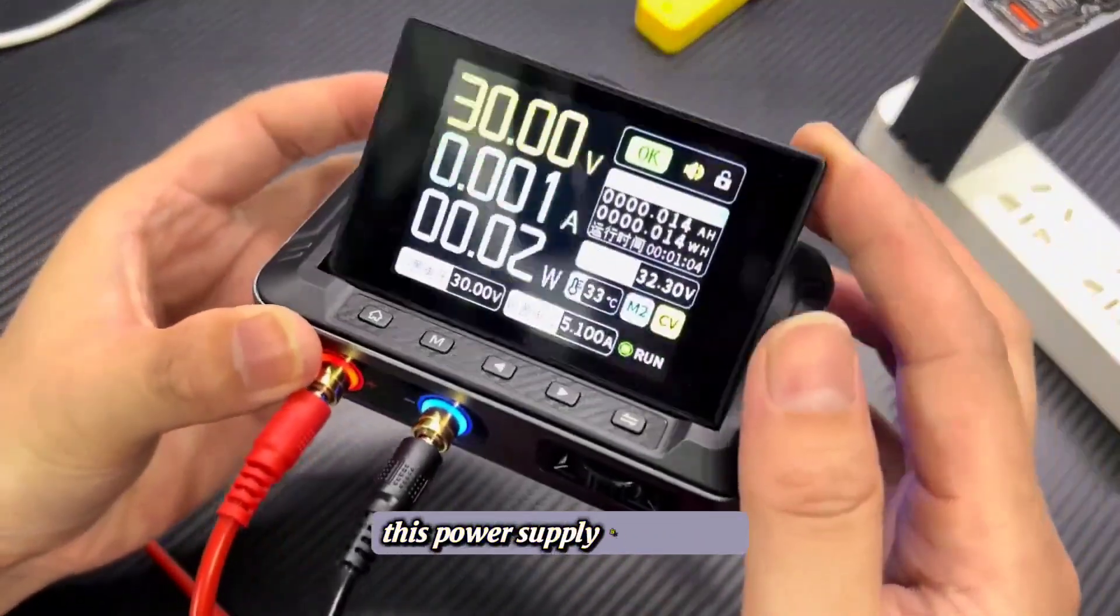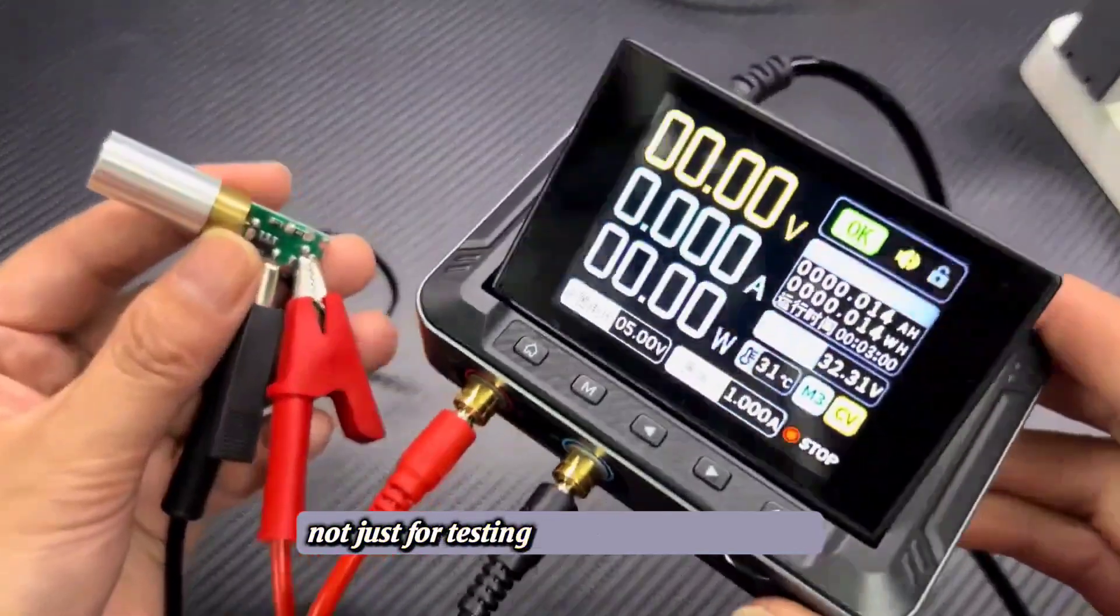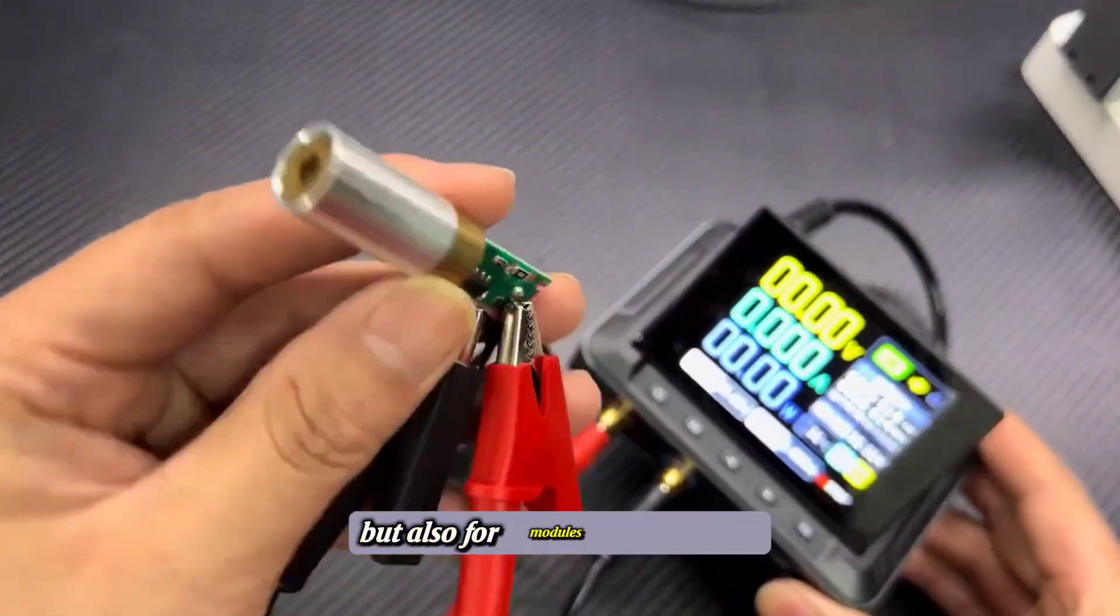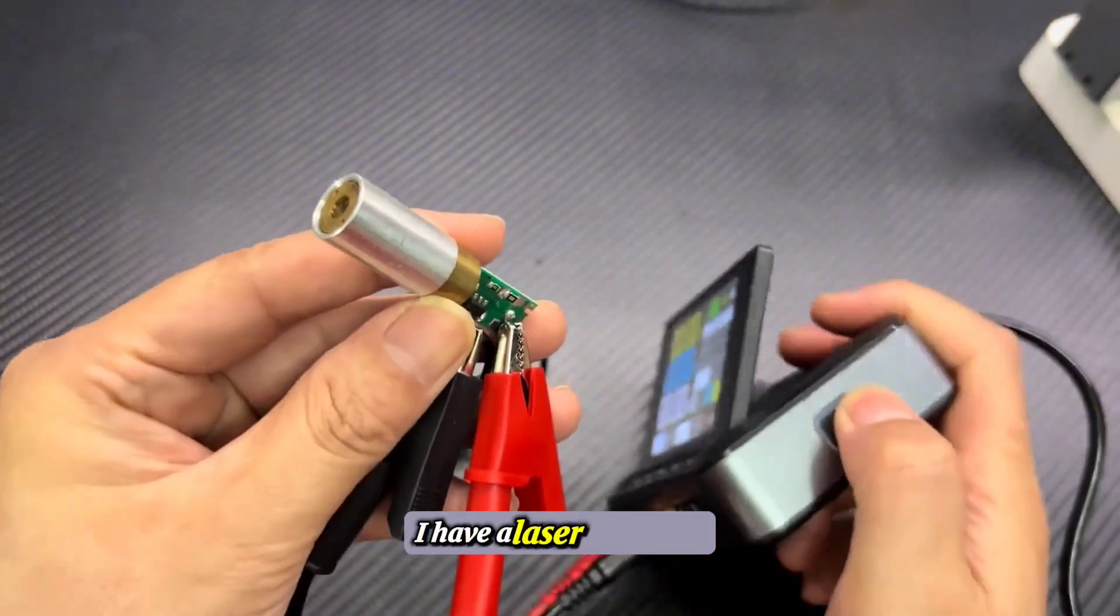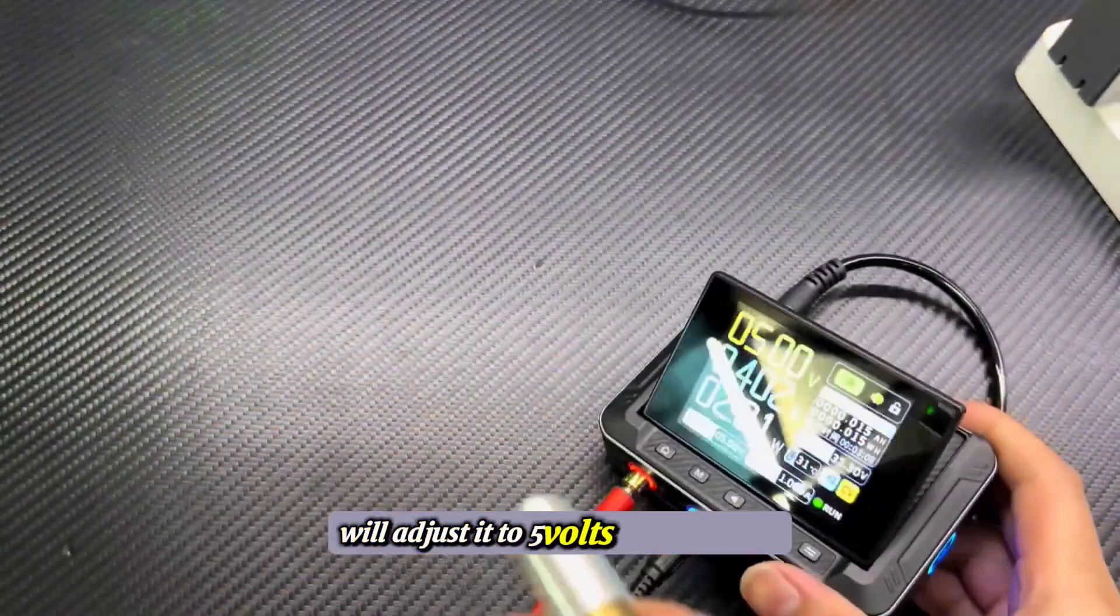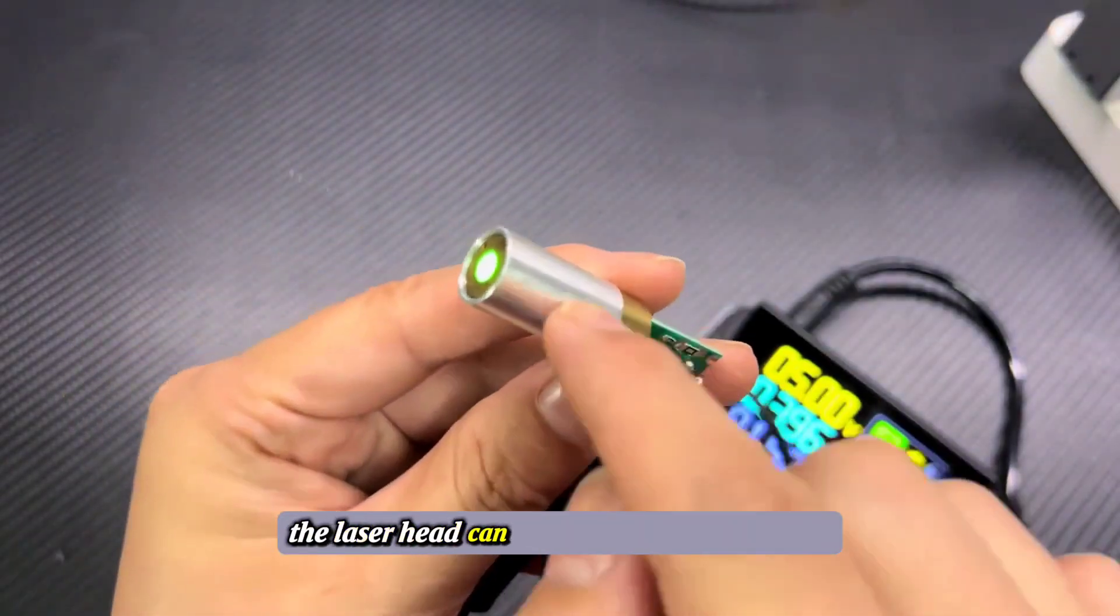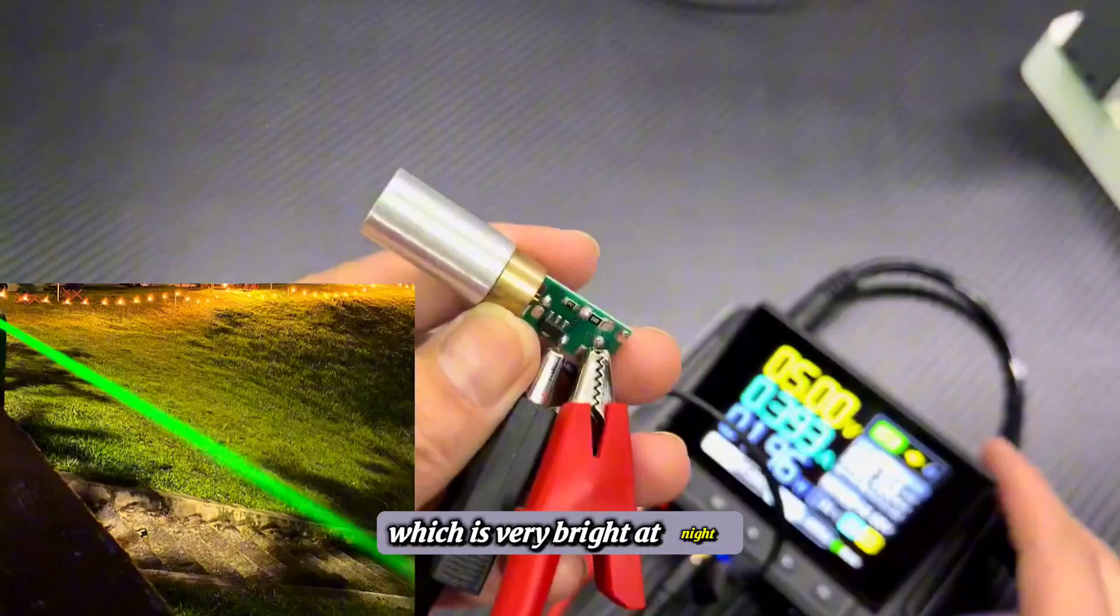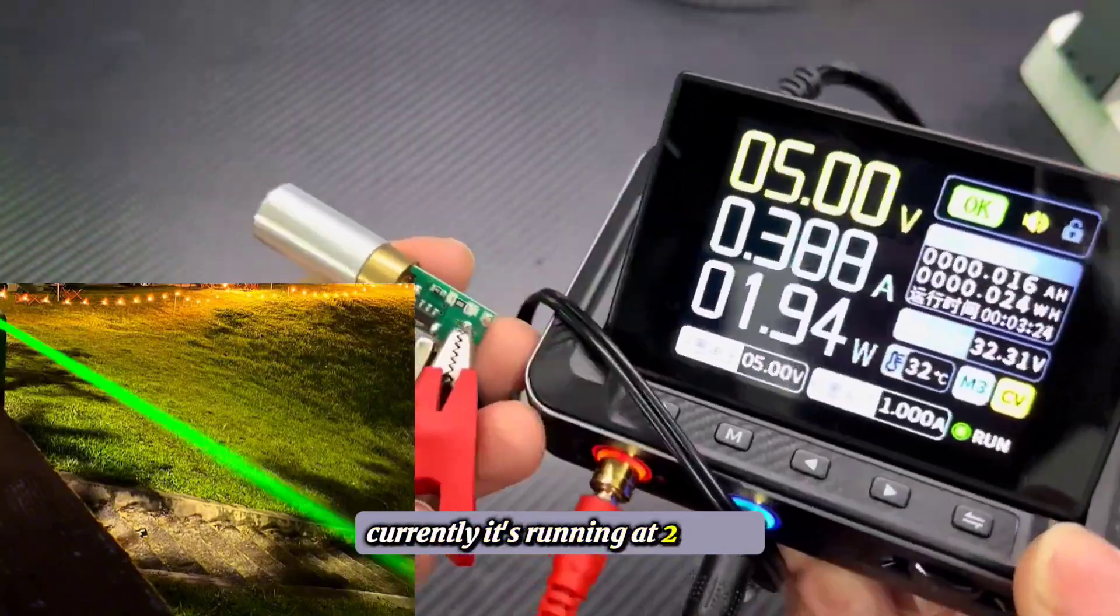This power supply is excellent, not just for testing electronic components, but also for modules. For example, I have a laser head here. We'll adjust it to 5 volts and turn it on. The laser head can project up to 1,000 meters, which is very bright at night. Currently, it's running at 2 watts.